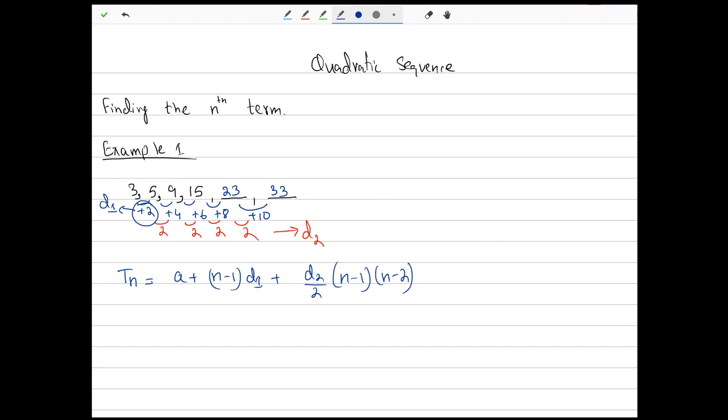Now, let's see what is a, what is d1, and what is d2. A is your sequence's first term. d1 is your first difference. And d2 is the difference of the difference. So the second difference is 2, the first difference is 2, and the first term is 3.